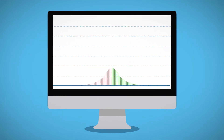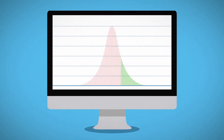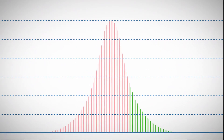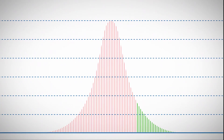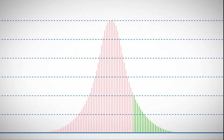The absolute value of the delta also shows the approximate probability that the option will finish in the money. For example, if the option has a delta of 50, it suggests that it has a 50-50 chance of finishing in the money. A delta of 20 suggests it has a 20% chance of finishing in the money.